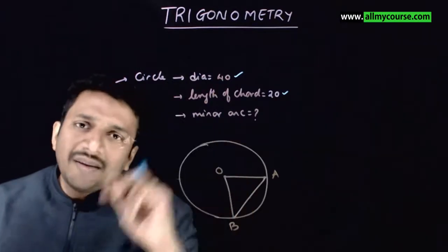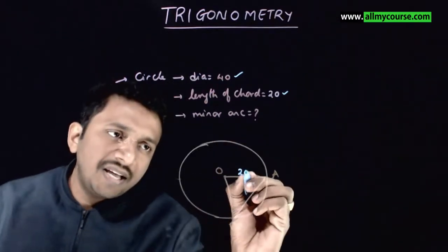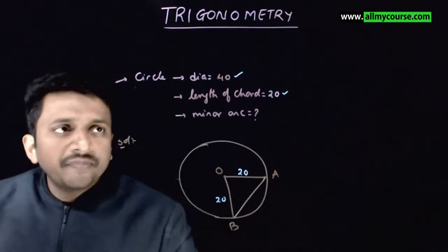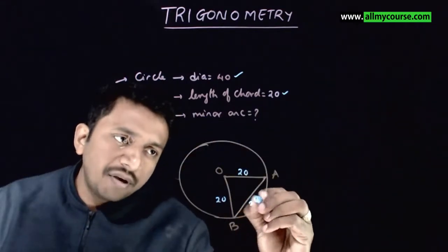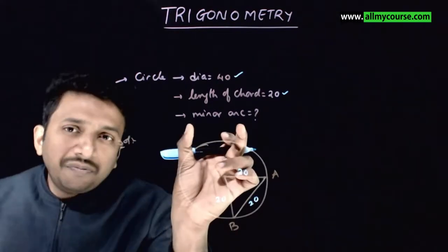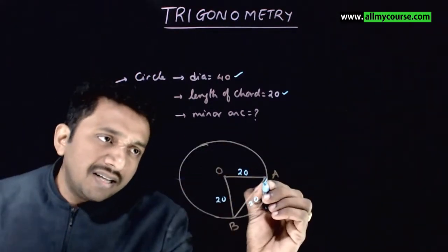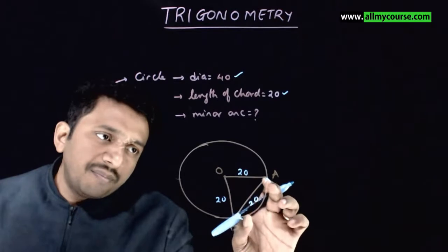That is, you have a circle whose diameter is 40 and the radius can be taken as 20. And the length of the chord is also equal to 20, that is, you have a chord whose length is 20. Now, you are asked to find the length of minor arc, that is, you want the length from here to here.